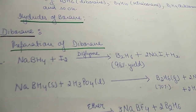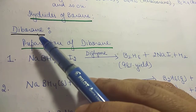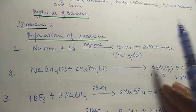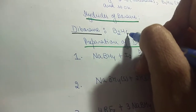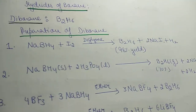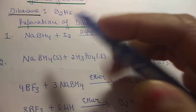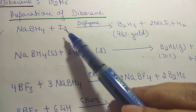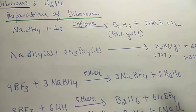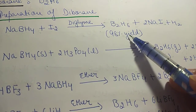We will take the example of diborane, B2H6. Now, what are the methods of formation of diborane? With the help of sodium borohydride when it is treated with iodine in the presence of diglyme, it gives us B2H6 with a yield of 98 percent by this method.